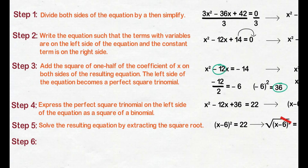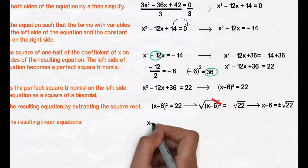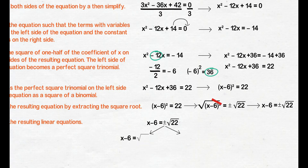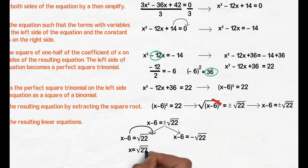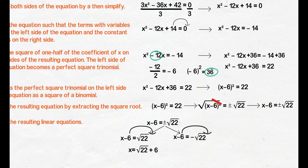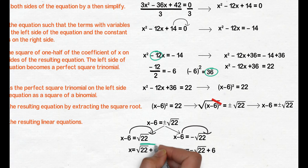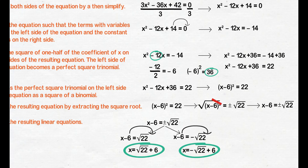Step 6: solve the resulting linear equations. Separate natin ang positive sa negative. Unahin natin ang x minus 6 equals square root of 22. Transpose negative 6 sa right side ng equation, we get x equals square root of 22 plus 6. Next, x minus 6 equals negative square root of 22. Transpose negative 6 sa right side, we get x equals negative square root of 22 plus 6. So, x equals square root of 22 plus 6 and x equals negative square root of 22 plus 6 will be our solutions or roots.